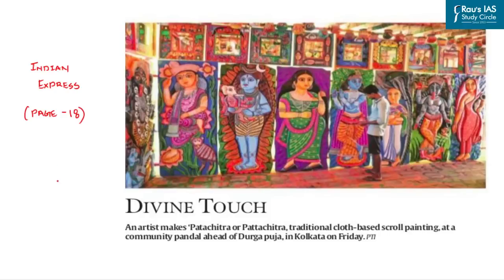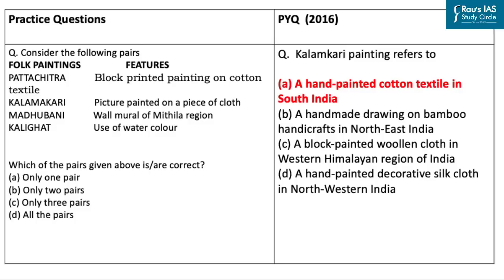The next article talks about the Pattachitra art of Kolkata. Pattachitra is a scroll painting. UPSC in previous years under the art and culture section has asked questions related to painting, dance, drama, etc. Thus this area becomes important for us.